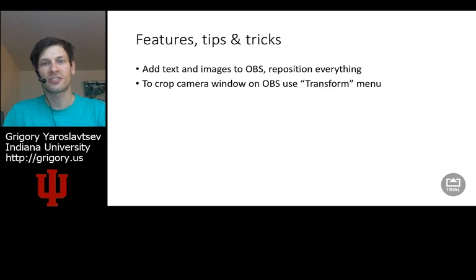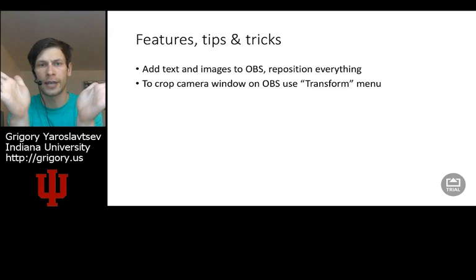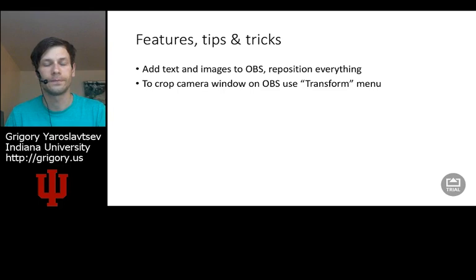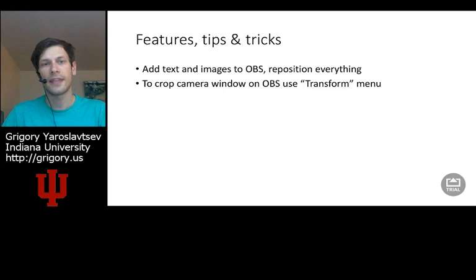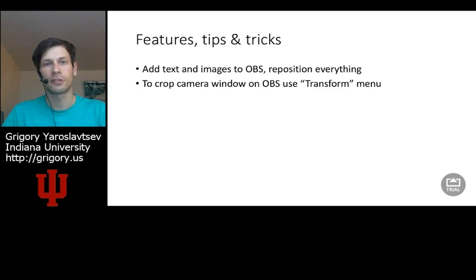One tip I want to share is how to crop the video output from your camera. By default, when you set up a camera output, an optical camera like the one on my laptop has a really wide field of view, making it very inconvenient to place anywhere on the screen. OBS is free software still under development, so it's not easy to find the crop option since it's not present in any of their menus. What you have to do is find the transform menu and create a new transform, where you can specify cropping options on the left, right, top, and bottom to get the crop you want.